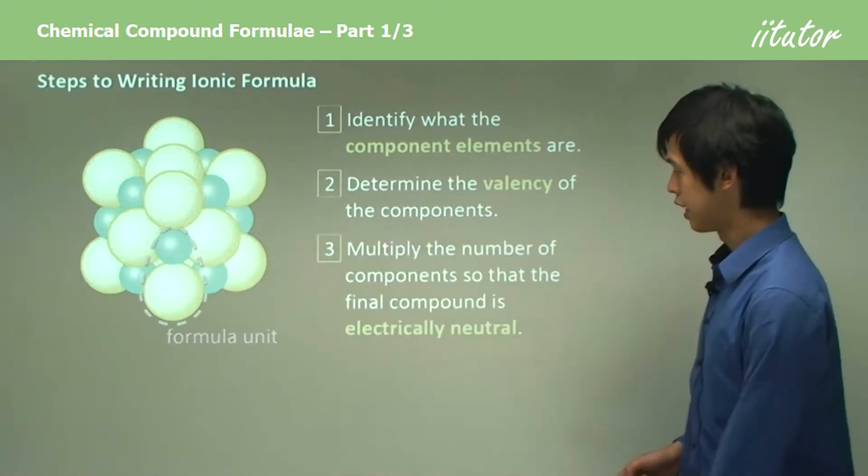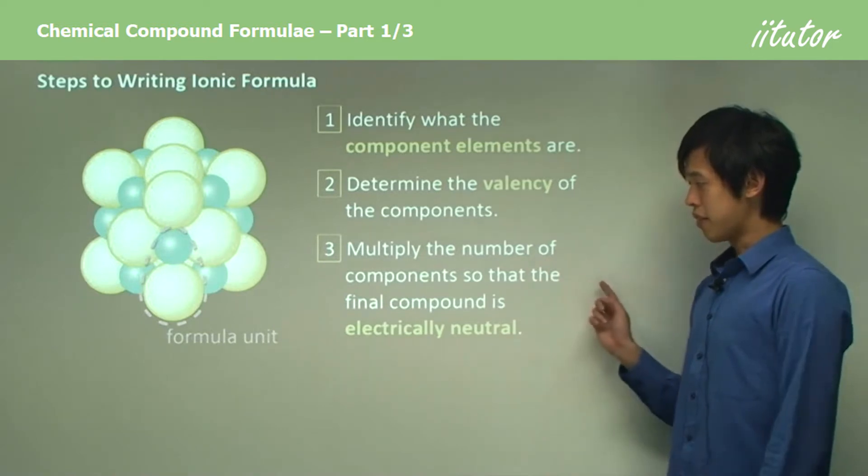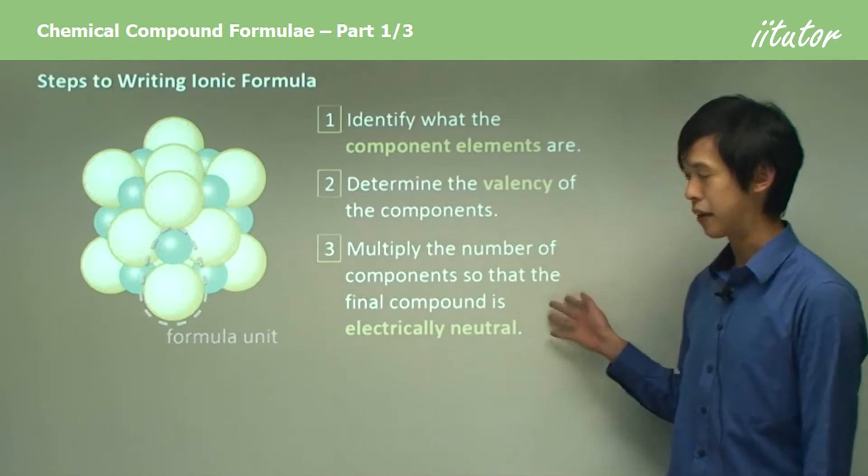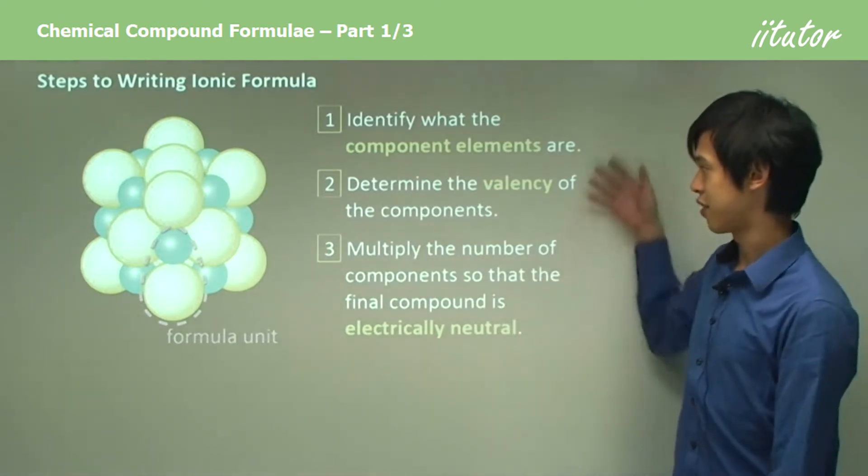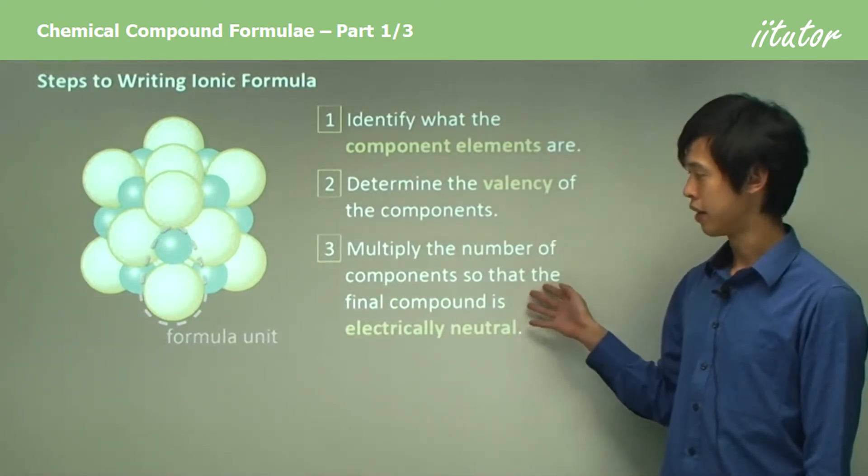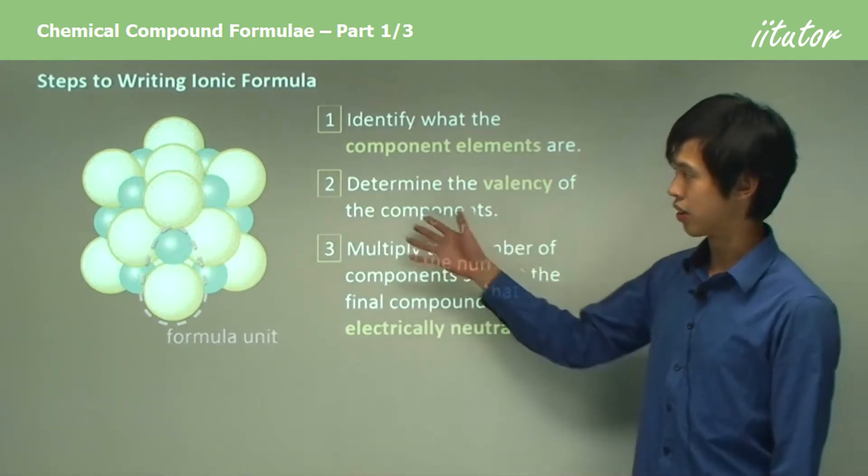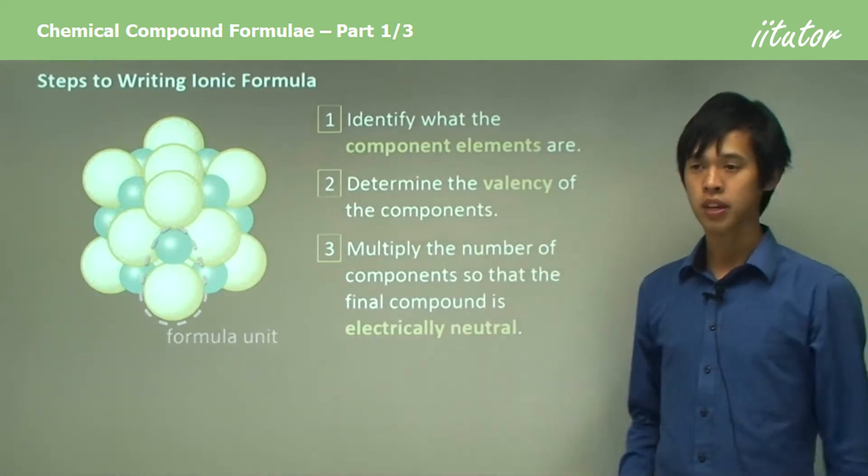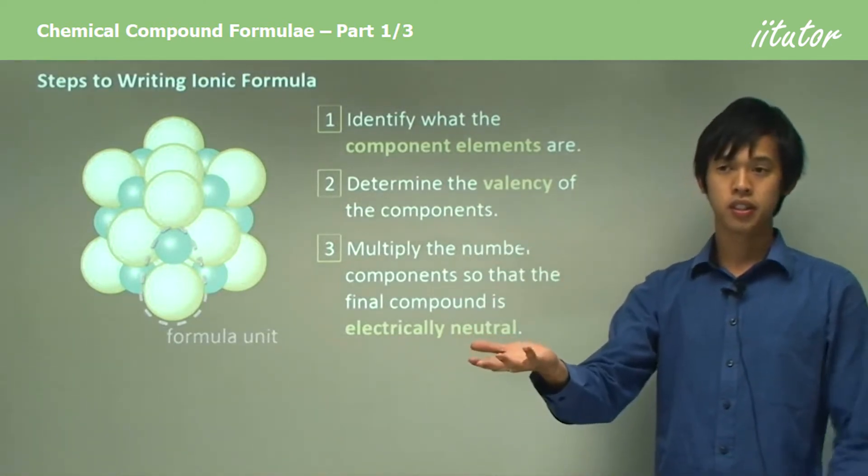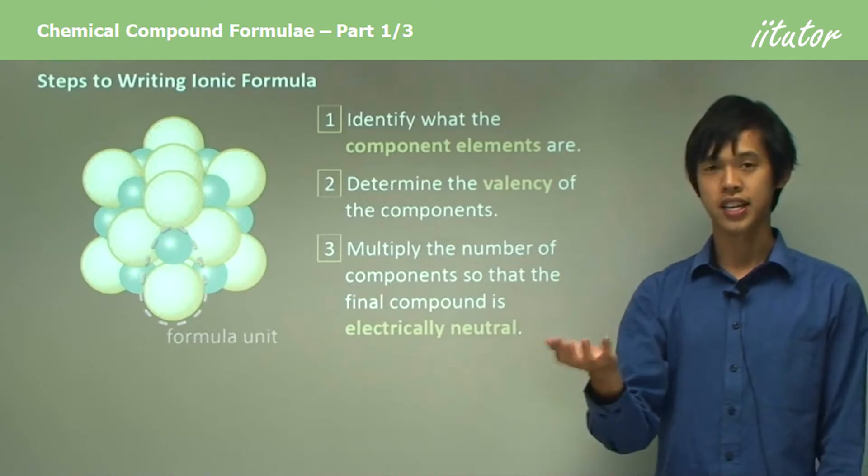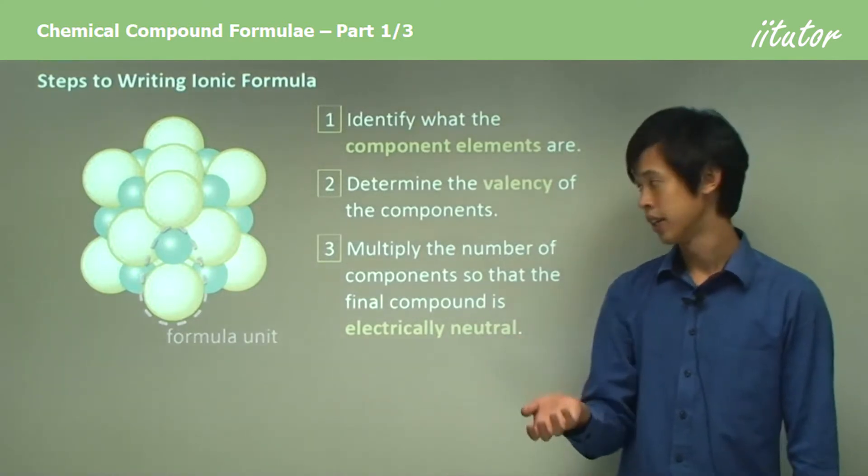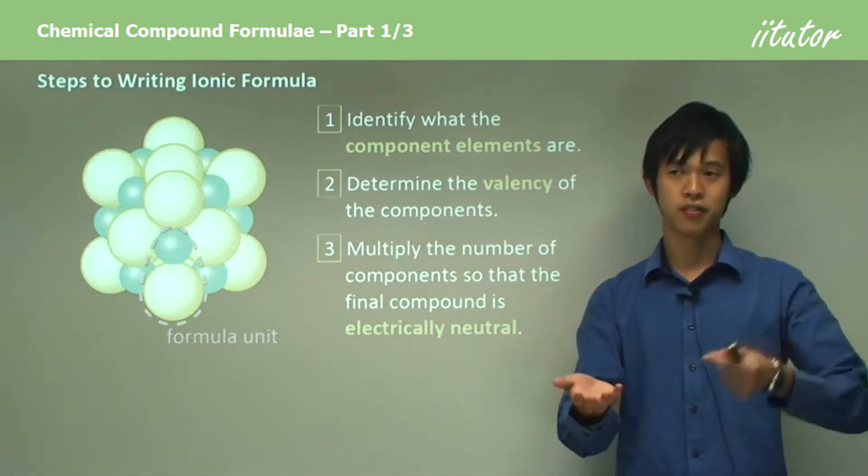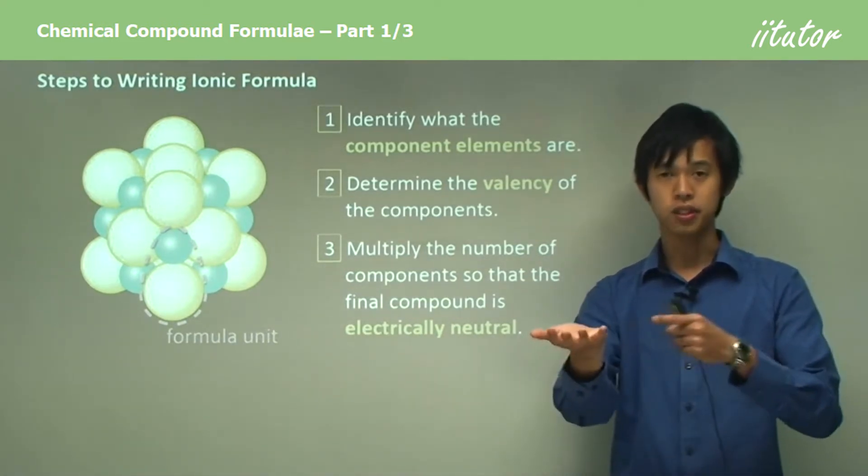Then we multiply the number of components so that the final compound is electrically neutral. This is a complicated one and it doesn't super make a lot of sense right now, but basically your ionic compound will be electrically neutral from far away. If I was to hold a piece of salt and look at it, I would see it as an electrically neutral piece of salt.